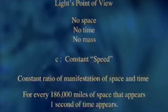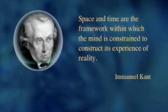And again, Kant was onto this 200 years ago. He said, space and time are the framework within which the mind is constrained to construct its experience of reality. He didn't see that space and time were part of the external world. They're part of the mind. And it was 100 years later that Einstein came along and showed that he was true.